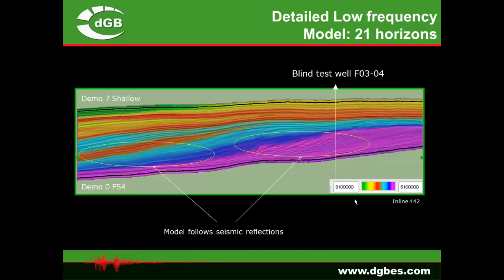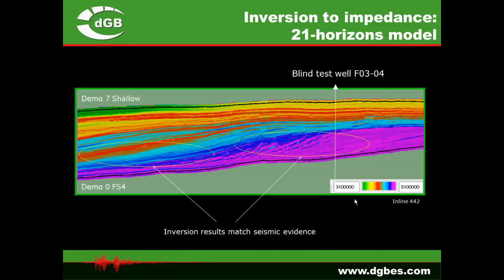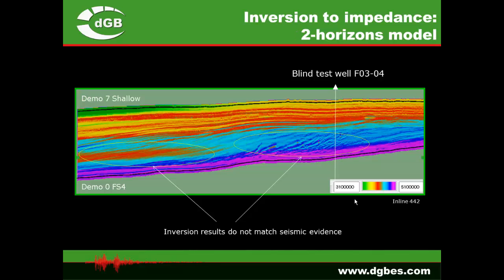The problem with model-driven seismic inversion is that what you put in is what you get out. Inverting the same seismic volume with the two different low frequency models confirms this: the inversion result using the two horizon model basically returns the model back to us and is not consistent with the seismic. The inversion result using the many horizon model follows the seismic reflection pattern and is consistent with the seismic — that is the result we can trust.